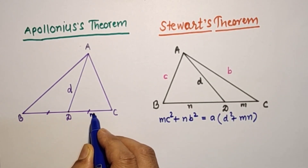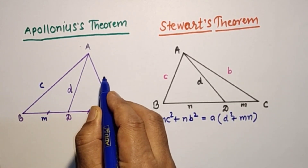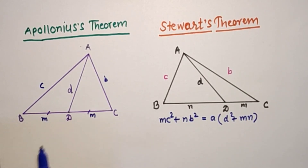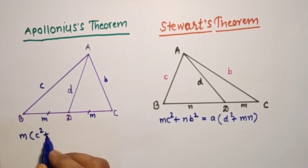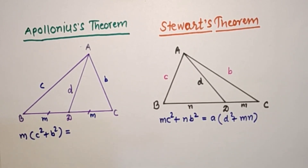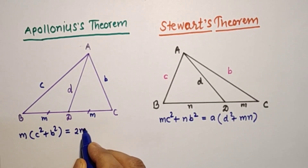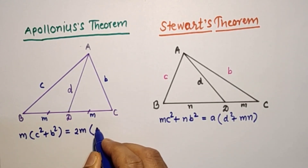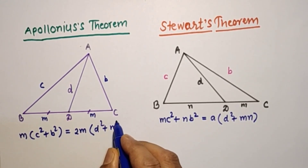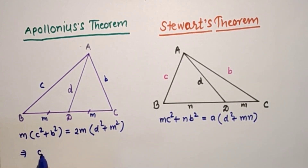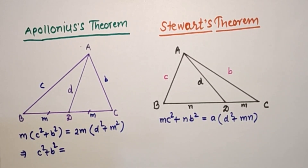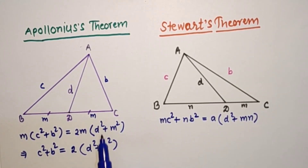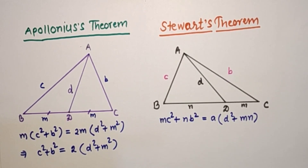Apollonius theorem is a special case of Stewart's theorem where AD is the median, meaning D is the midpoint of BC. Taking both segments as M, we get: M·c² + M·b² = 2M·(d² + M²), which simplifies to c² + b² = 2d² + 2M². Since we need a median for Apollonius theorem and here it is not a median, we will prefer Stewart's theorem.